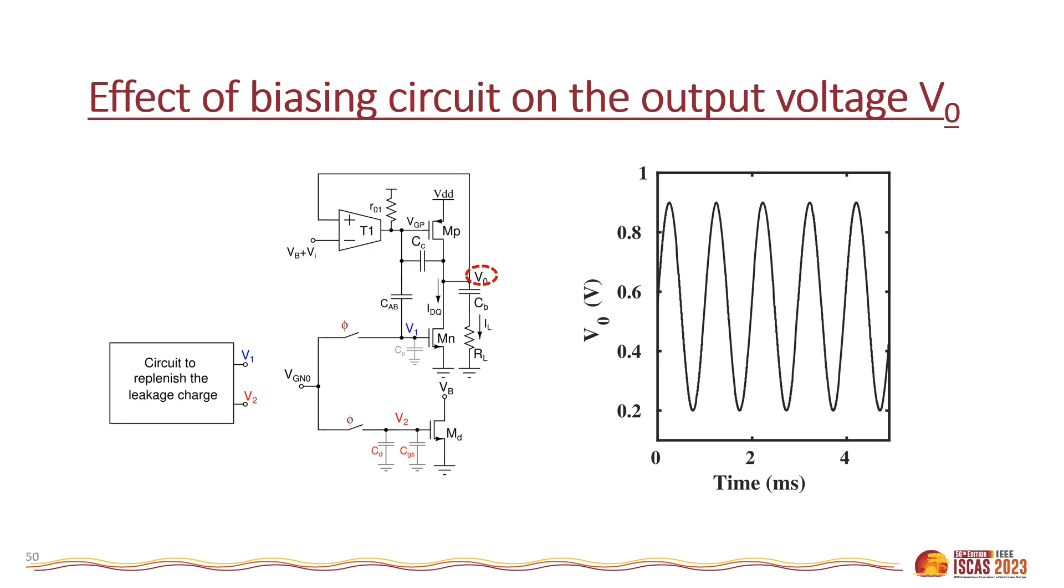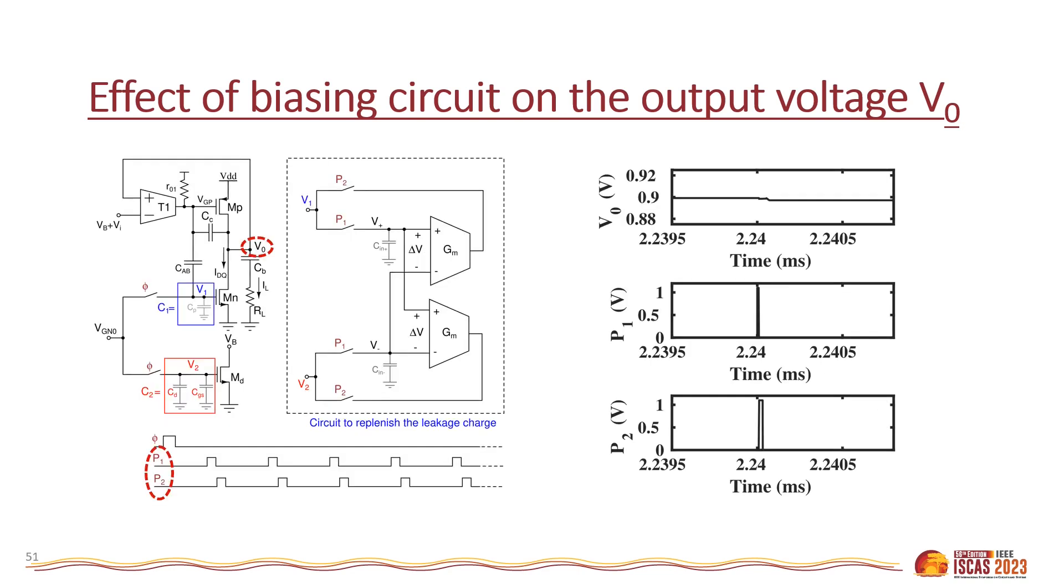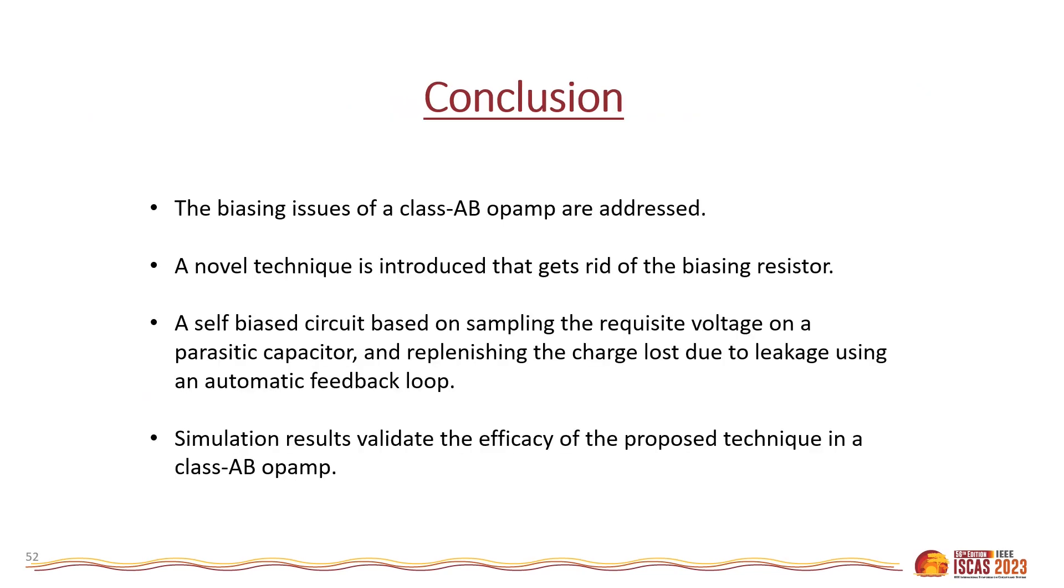The plot in the right shows the amplifier's response to an arbitrary sinusoidal input of frequency 1 kilohertz and amplitude 350 millivolts. Biased voltage VB for this simulation is 550 millivolts. Biasing voltage V1 has ripples due to P1 and P2. The output signal V0 shows no effect of ripples in voltage V1 when it is close to the bias voltage and a small spike of 0.9 millivolts is observed at the peak of the waveform.